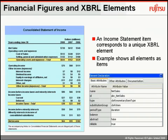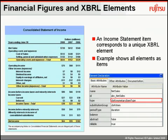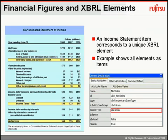Each element has additional qualifying information associated with it called attributes. If we look at net sales in the income statement, you'll see that this is represented in the taxonomy on the right-hand side with a name and an ID. Net sales is also a monetary item. As net sales is a financial fact which occurs over a period of time, it's defined as having a period type of duration — in other words, it's true over that period of time, not at a particular instance of time.